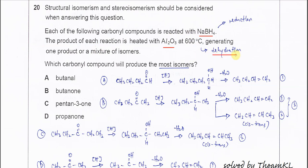So from here we know that the product undergoes dehydration. Two processes are involved: first is reduction followed by dehydration, and it will produce one or more isomers. So from these compounds, which one will produce most isomers after the two reactions?